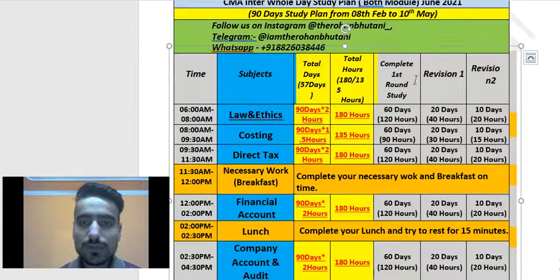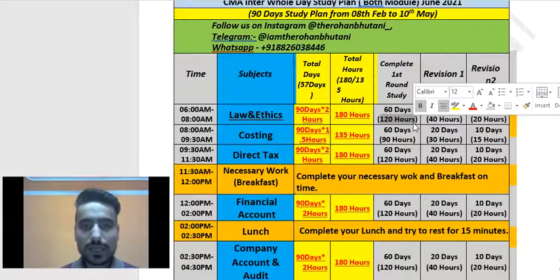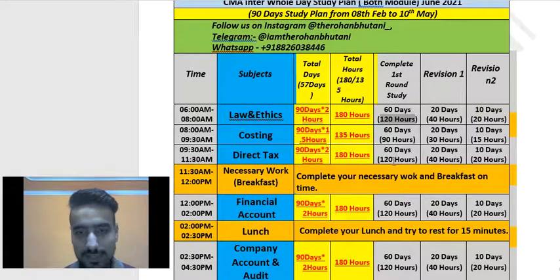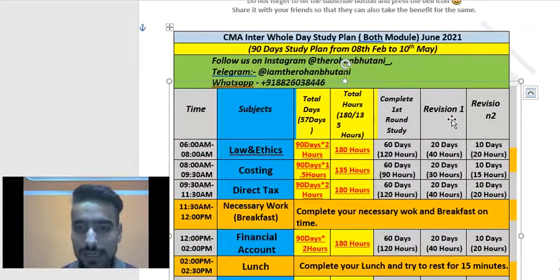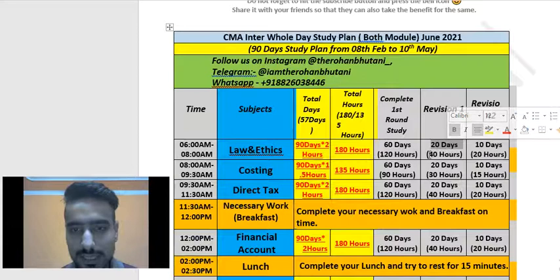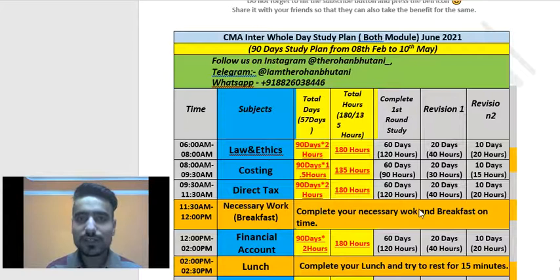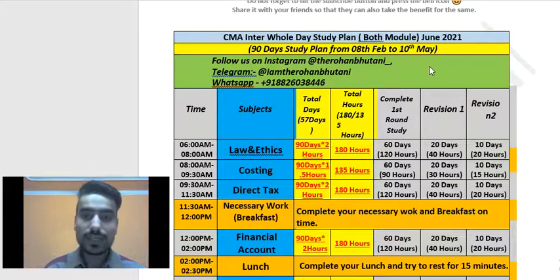For the first round study, give 60 days — that is 120 hours. In 60 days you will be completing your subjects, and this 60-day allocation is the same for each subject. After those 60 days, your first revision starts — give 20 days, which is 40 hours. Then for the second revision, give 10 days, around 20 hours per subject, which is more than enough. In this way, you can easily complete two full revisions by 10th May 2021.